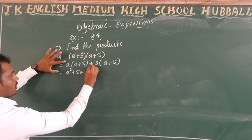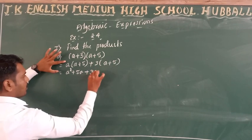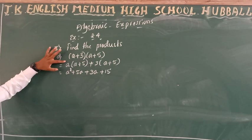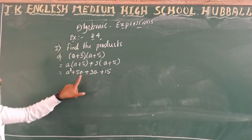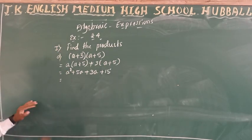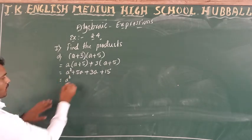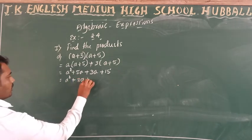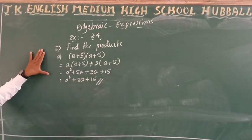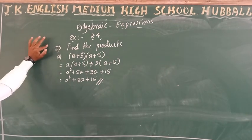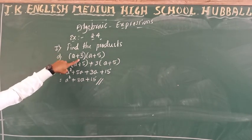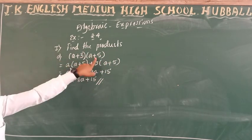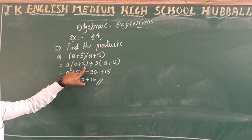Then 3 into 5 gives 15. As we have learned, if we get like terms we can add them. So a squared plus 5a plus 3a plus 15 — that is a squared plus 8a plus 15. This is your final answer. Let me explain again: (a + 3) into (a + 5) — first write 'a' outside the bracket, write (a + 5) inside.